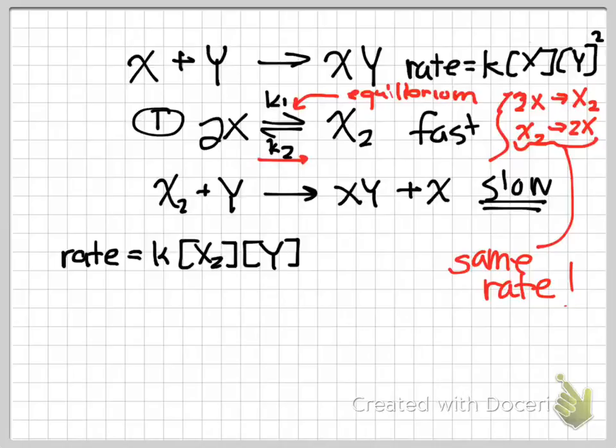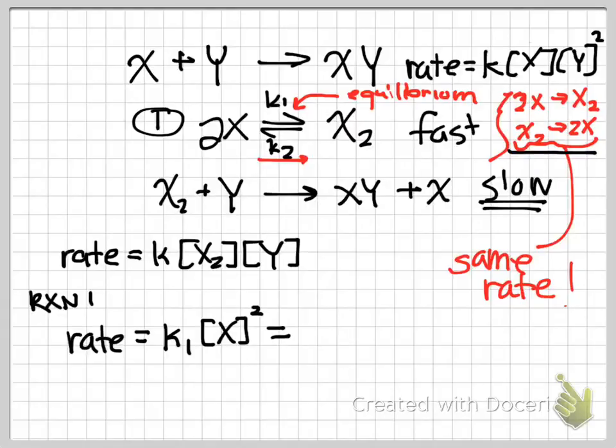K1 is that the rate equals the forward reaction rate, which is the reaction constant K1 times X squared, which is also going to equal the reverse reaction, which is K2 times X2.